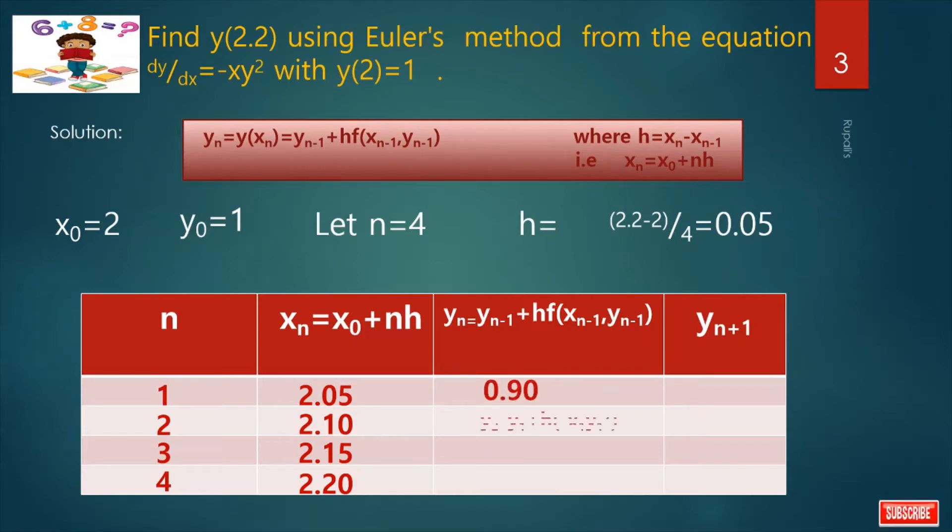What is y2? y2 is y1 plus h into minus x1 y1 squared and after calculation I get the value. What is y1? y1 is 0.90. What is x1? x1 is 2.05 and what is h? It is 0.05.